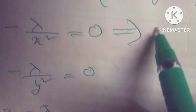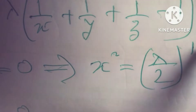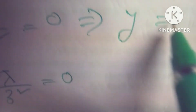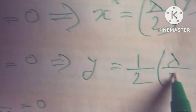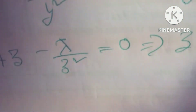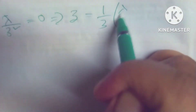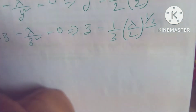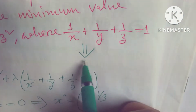From these equations, that implies x equals (lambda/2) to the power 1/3. That implies y equals (1/2)(lambda/2) to the power 1/3, and z equals (1/3)(lambda/2) to the power 1/3. Now, from equation 1 we substitute into the constraint.